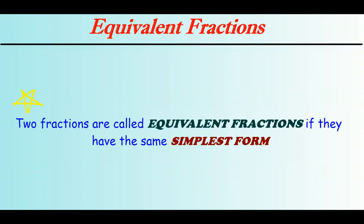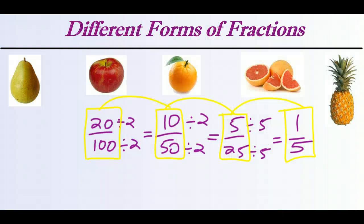So equivalent fractions have the same simplest form. Looking back at our example with the pineapples, we started with 20 over 100 and ended up at 1 fifth. Along the way, we created a number of fractions that all represent the same thing — they all have the same simplest form, so they're all equivalent fractions. As long as you multiply or divide the numerator and denominator by the exact same number, you will always create an equivalent fraction. It's in the cases where you don't multiply or divide by the same number that you potentially run into trouble.